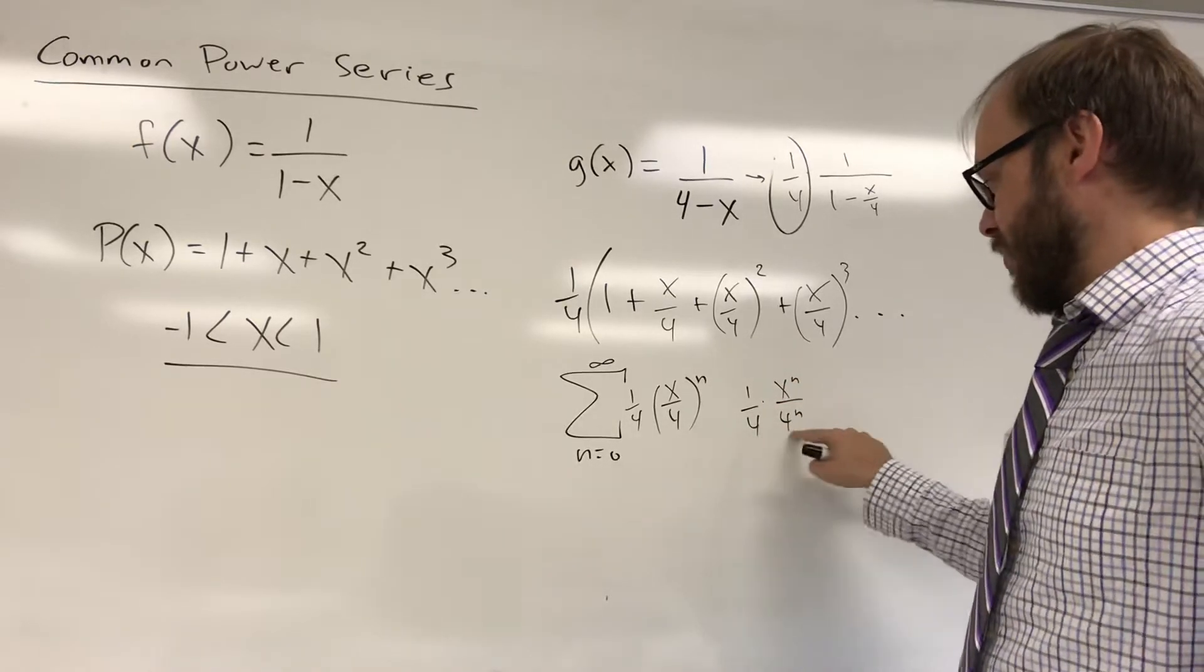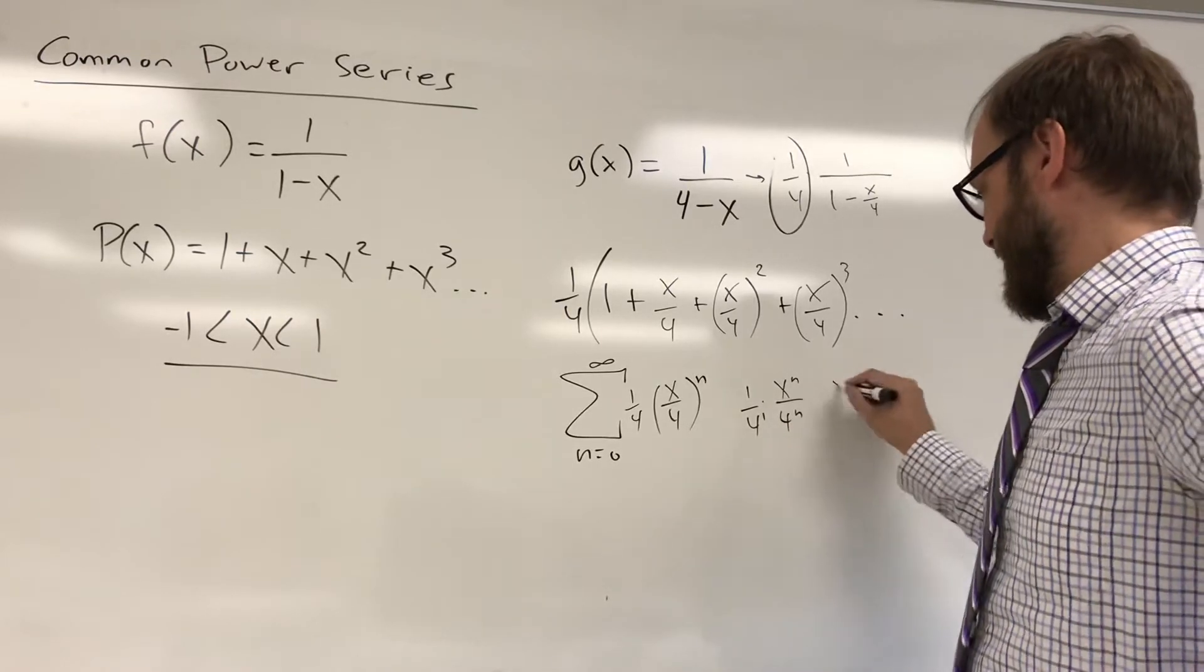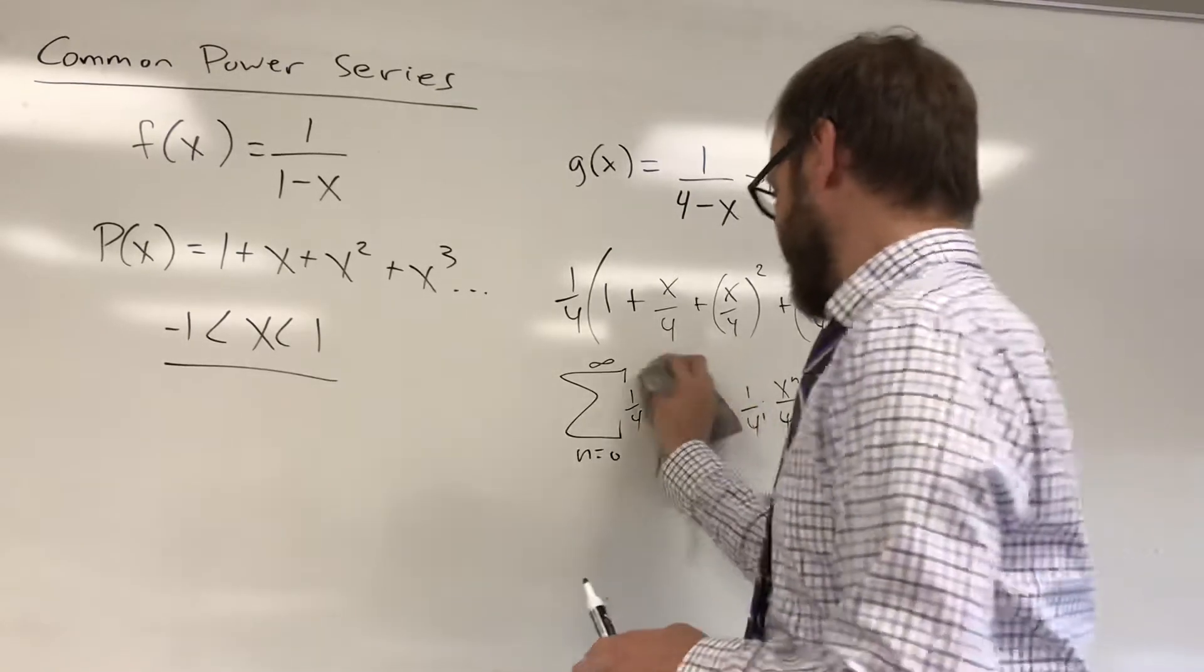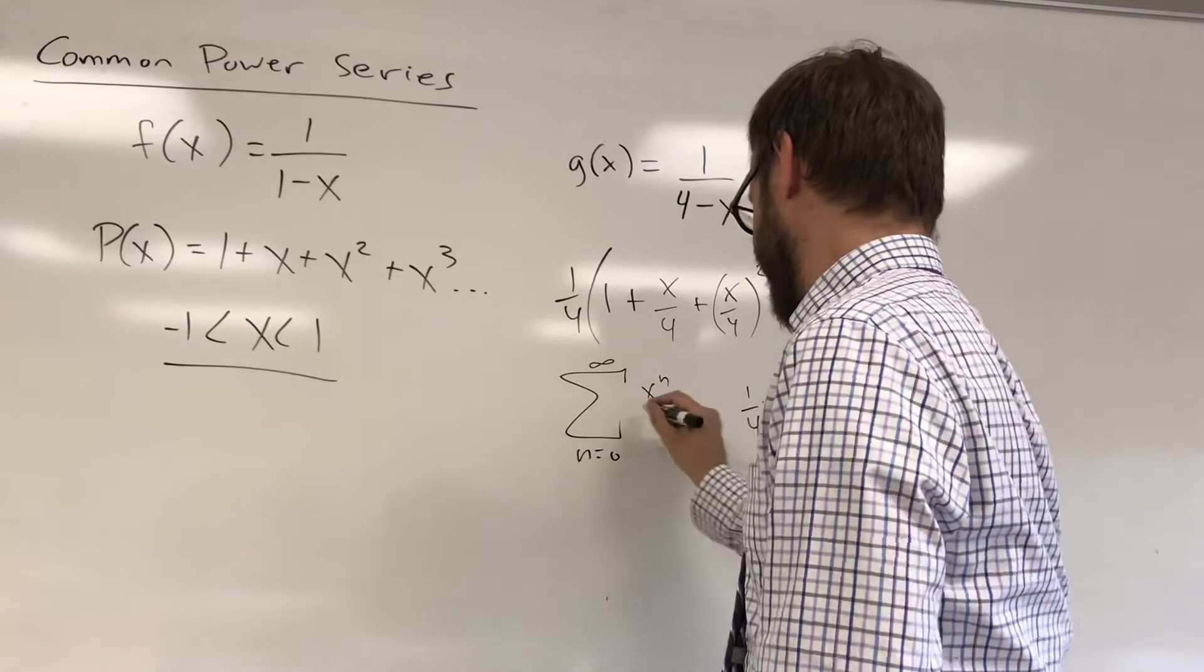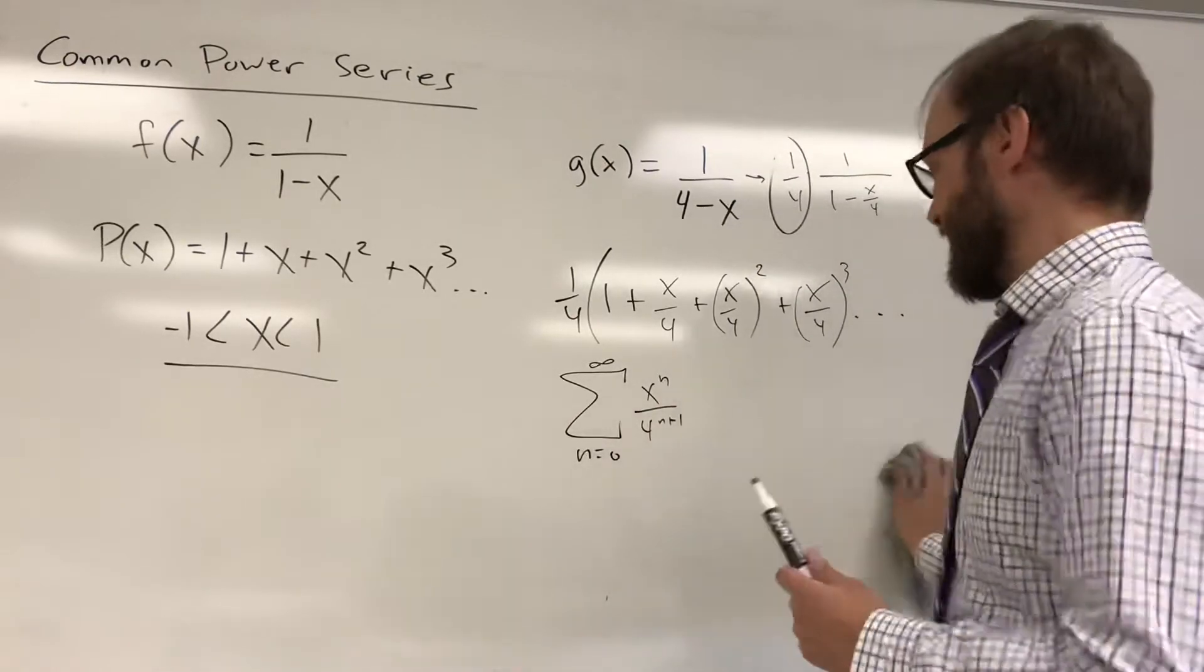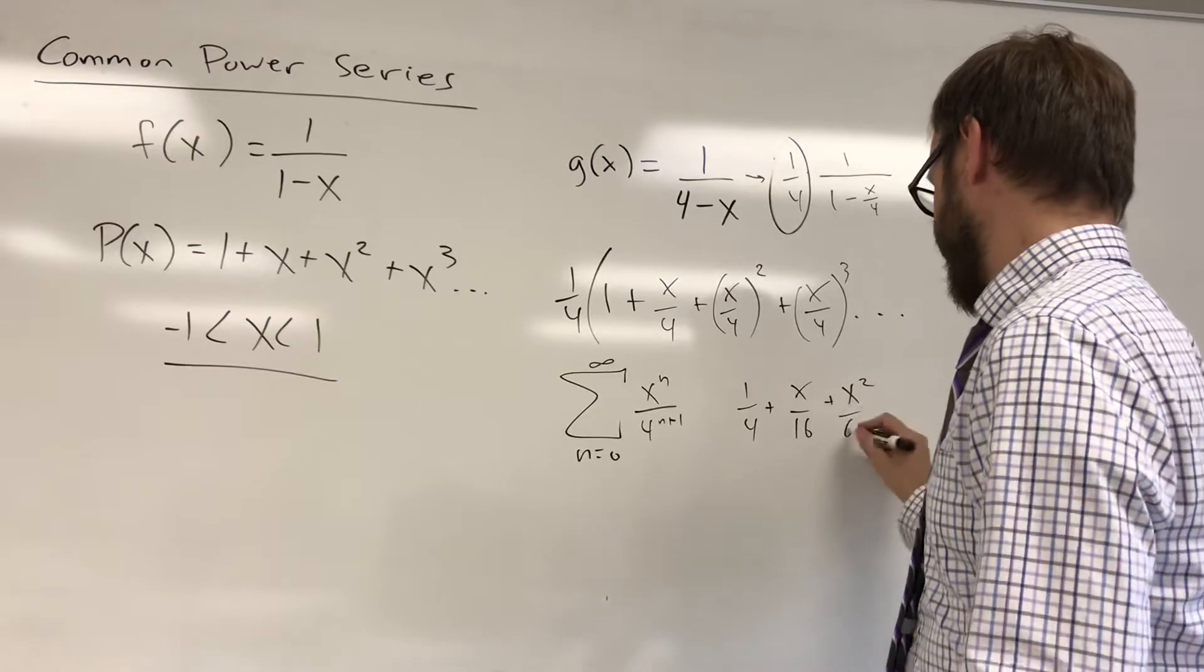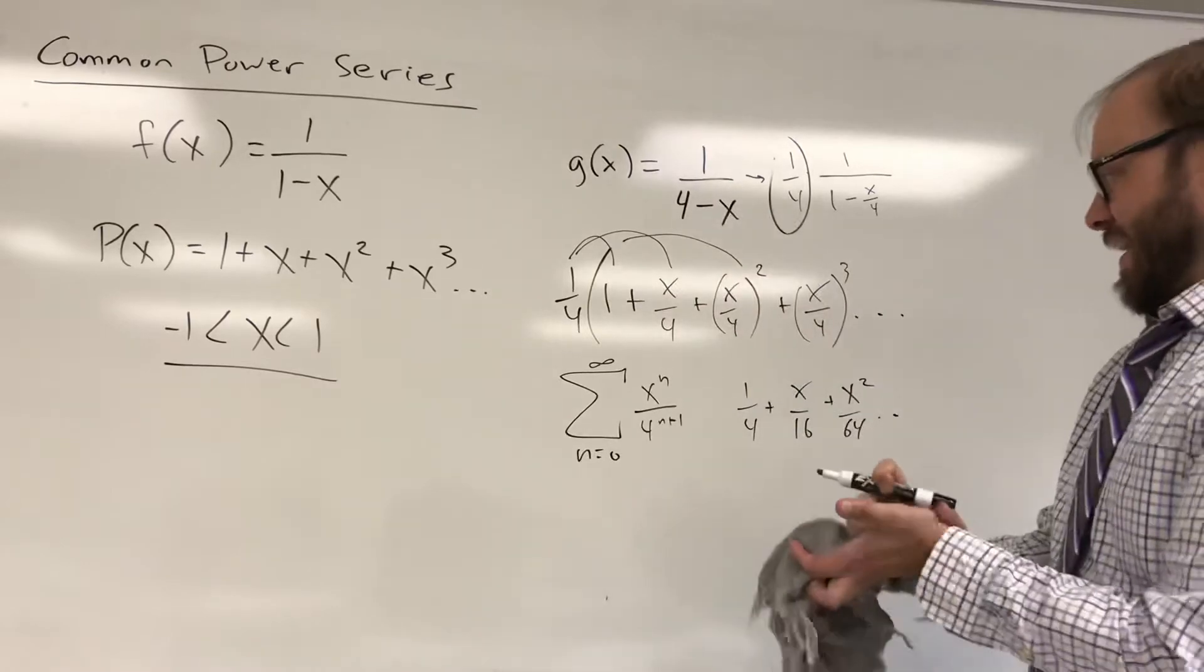So you could also go ahead and multiply. You've got a 4 to the first being multiplied by a 4 to the n. You could write this as x to the n over 4 to the n plus 1. It would probably be the best way to write it. And again, once you do it that way, I would go back and check and see, are you actually getting terms of the series that you thought you were supposed to get? And so if you look at this series here, that would be 1 fourth plus x over 16 plus x squared over 64 and so on if you distributed that 1 fourth through.